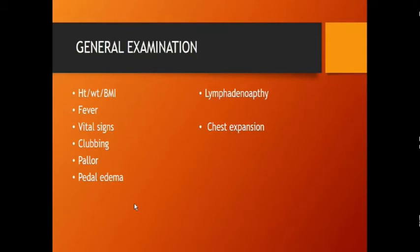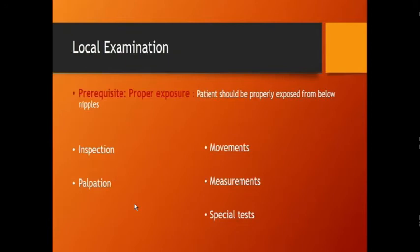Coming to local examination, which is much more important. The prerequisite is to properly expose the patient from just below the nipples downward — everything should be exposed so you can examine the hip joint properly. You have to expose from the level of the sternum or nipples downward. First we will go to inspection.